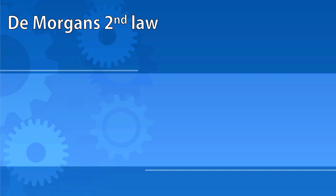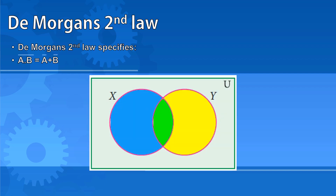De Morgan's second law specifies that NOT (a AND b) is the same as NOT a OR NOT b. NOT (a AND b) would be everything except the green section in the middle. Similarly, NOT a would be everything other than the blue circle, and NOT b would be everything other than the yellow section. So you can see this too defines everything except the green section in the middle.